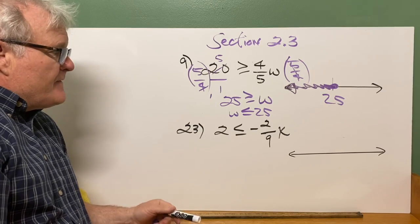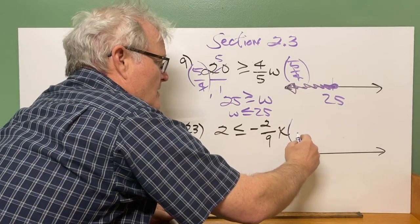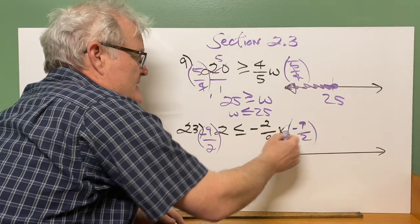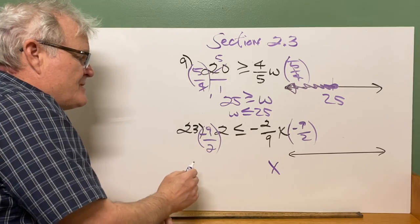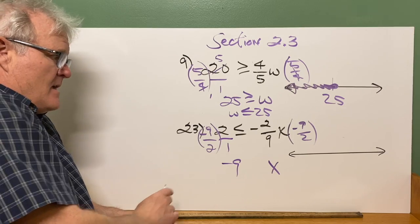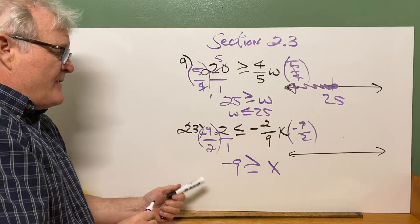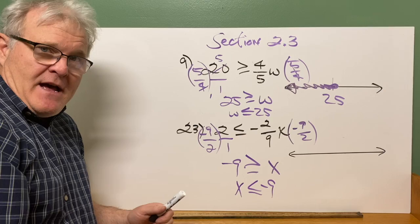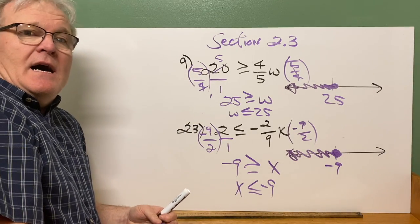For number 23, you have 2 is less than or equal to negative 2/9 x. To solve for x, multiply through by the reciprocal of negative 2/9, which is negative 9/2. Multiply each side by negative 9/2. On the right, the fractions multiply to 1, leaving 1x. On the left, 2 times negative 9/2 — cross-cancel the 2s — gives negative 9. Since I multiplied through by a negative value, the sign has to switch. So I end up with negative 9 greater than or equal to x. Rewriting with the variable on the left: x is less than or equal to negative 9. When you graph that, negative 9, solid circle, shaded to the left.